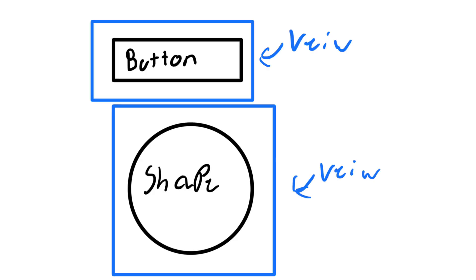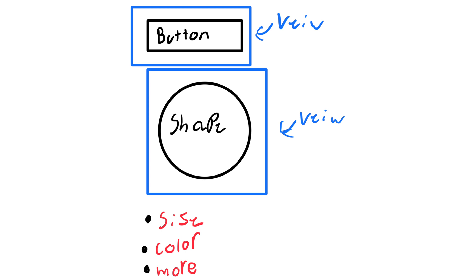First, we need to know what a view and a modifier are. This will help us find out whether to use Storyboard or SwiftUI. Views are what make up your app. They can be a button, a shape, and a lot more than just that, like an image or something else. A modifier is something that you can apply to these shapes, such as size, color, and more. For example, I can make a circle two times bigger than it is now with a modifier.